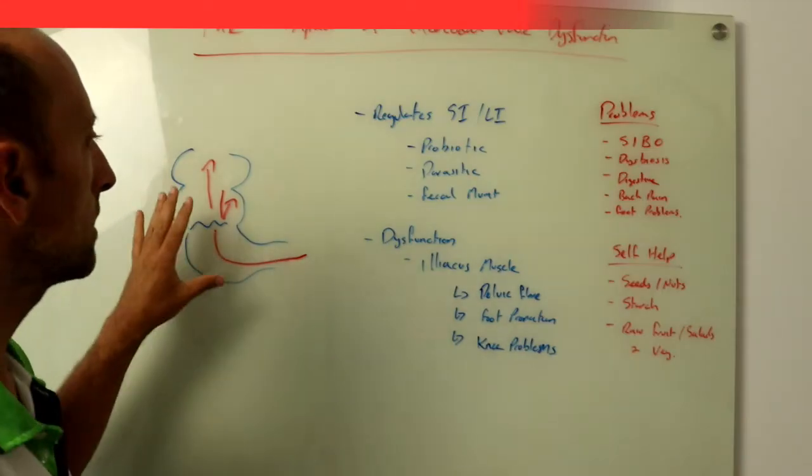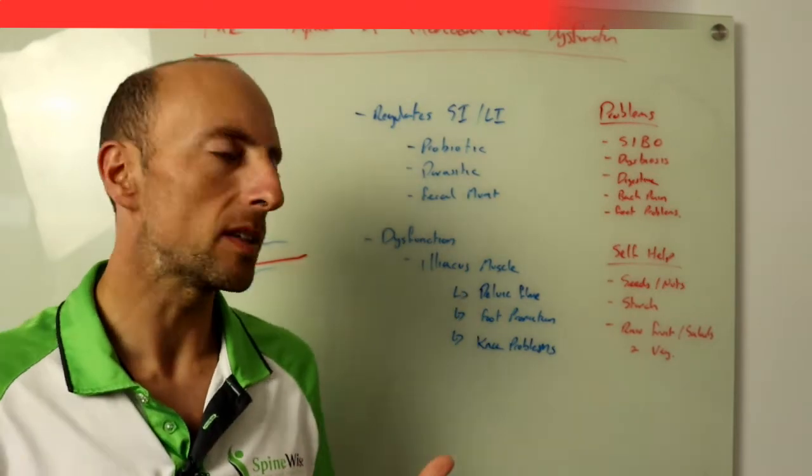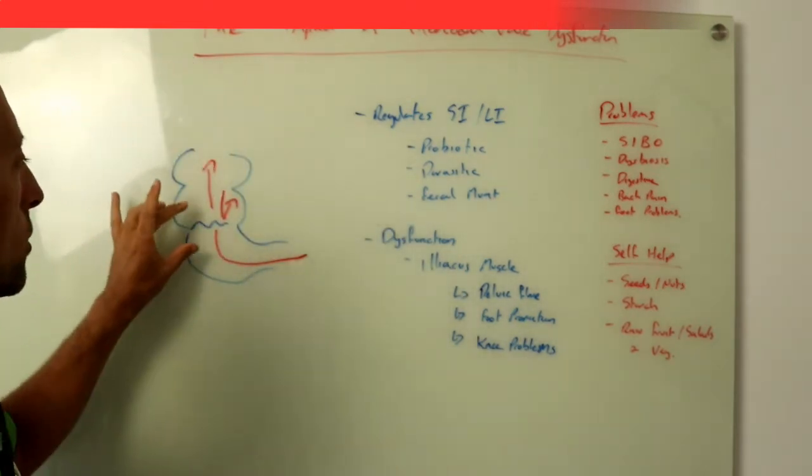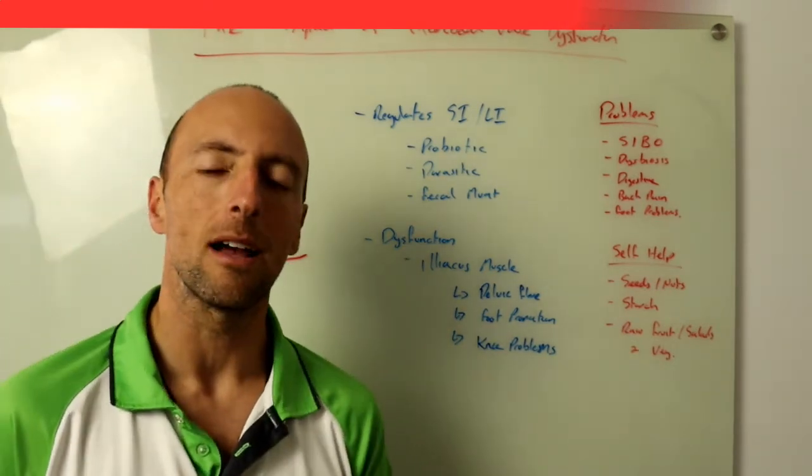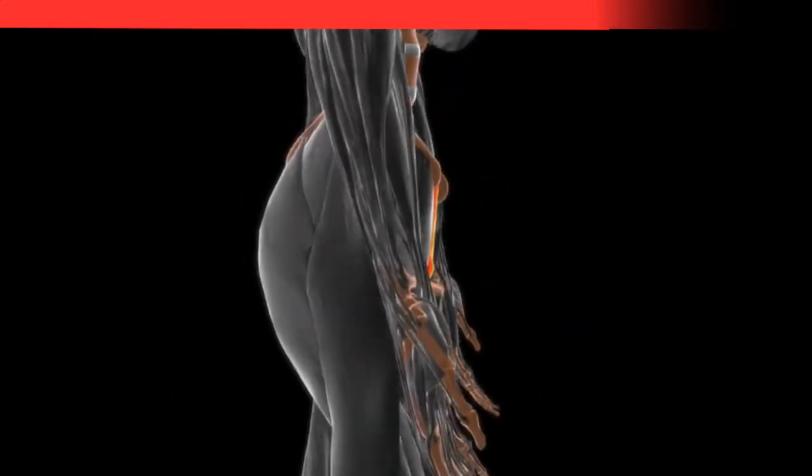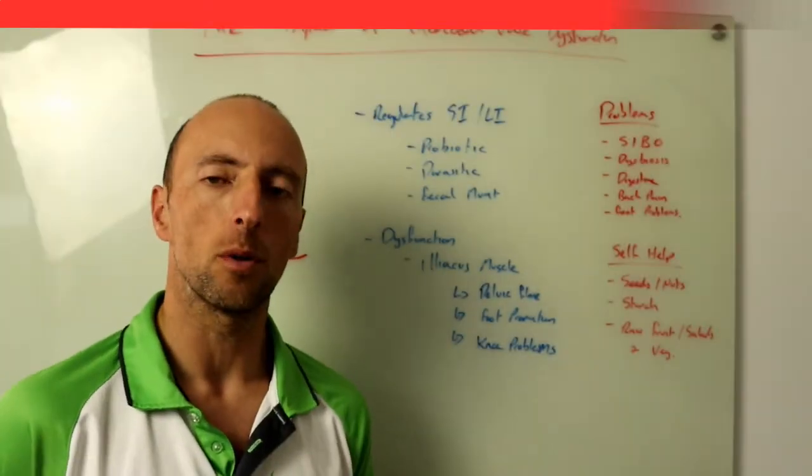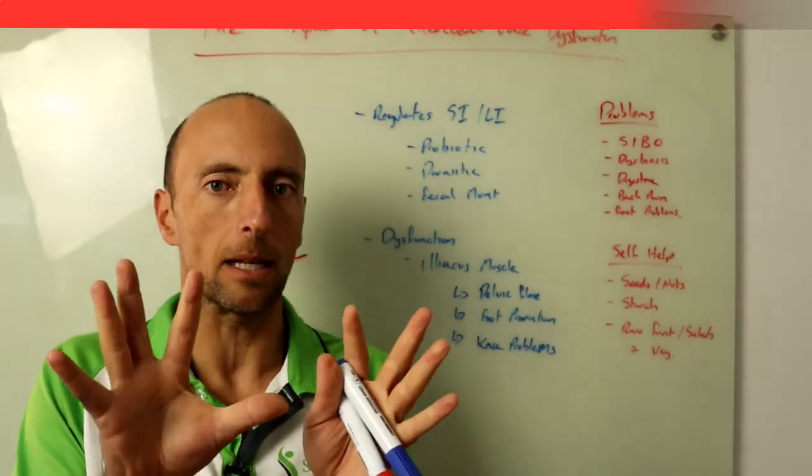One of the big things we see in regards to structure though is that it's been observed that when the ileocecal valve goes crazy or becomes dysfunctional it tends to somehow affect the iliacus muscle. Now your iliacus muscle is a big muscle that sits on the front edge of your pelvis and holds your pelvis together, stops it from falling apart and coming apart.